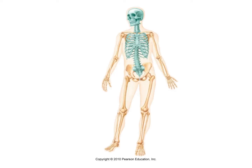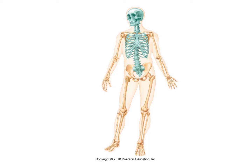The first two terms on the list are superior and inferior. The term superior refers to structures that are above another structure or closer to the head. The term inferior refers to structures that are below another structure or away from the head.